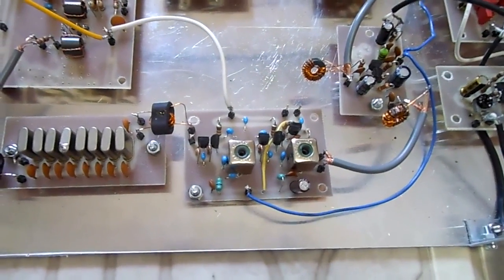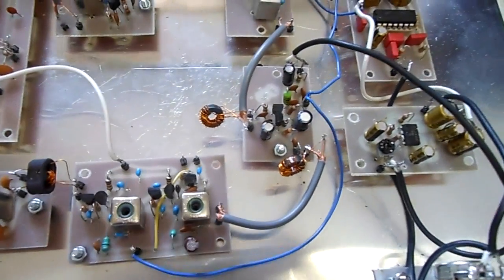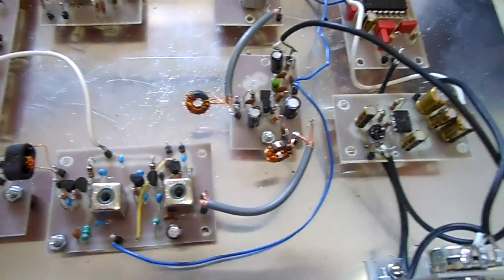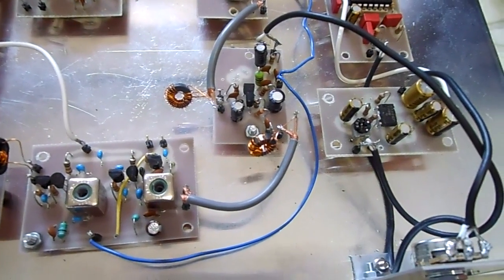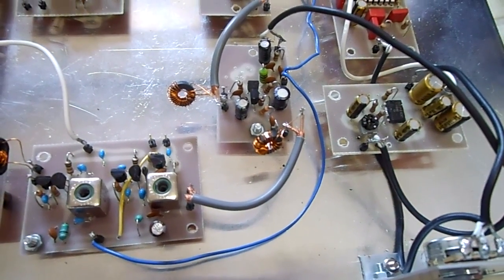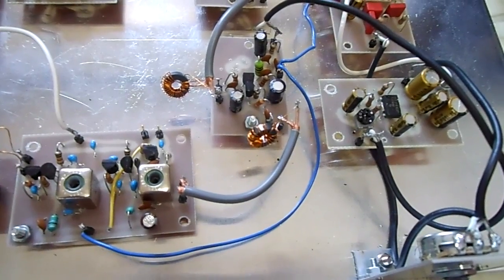The AF amplifier stage is followed by the product detector. This is original circuit using cascaded J310.